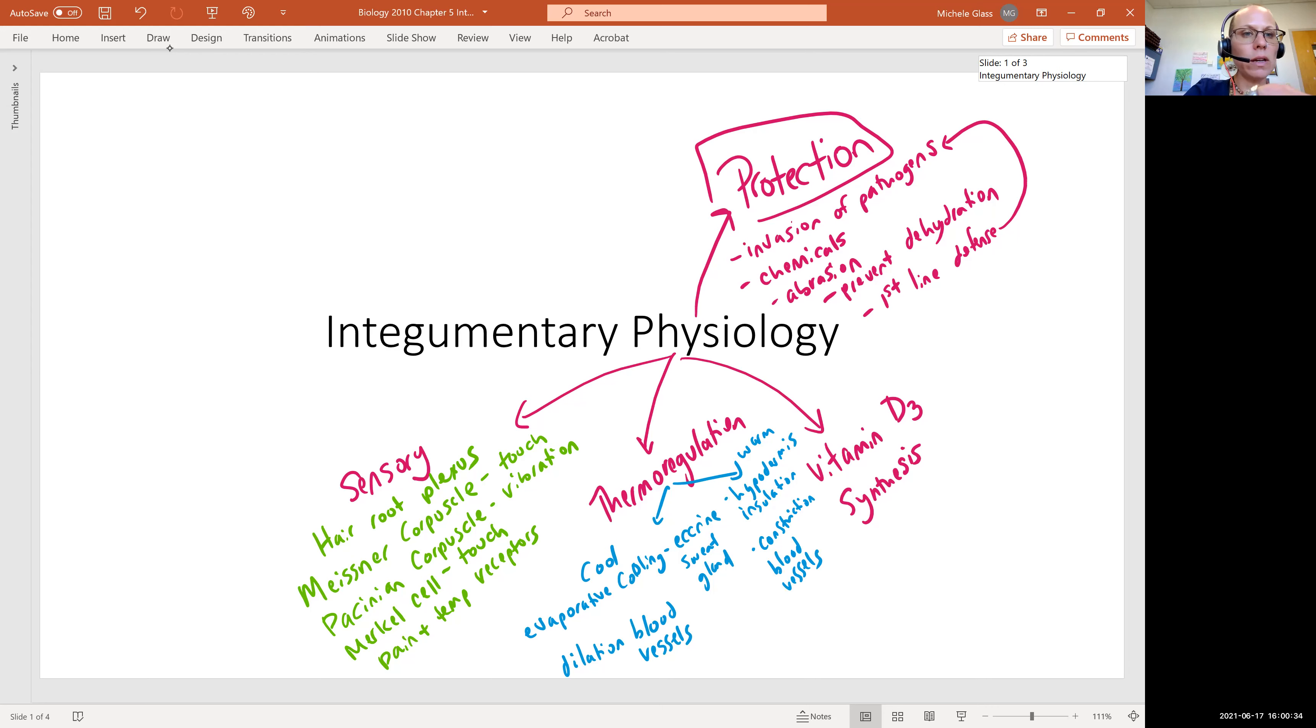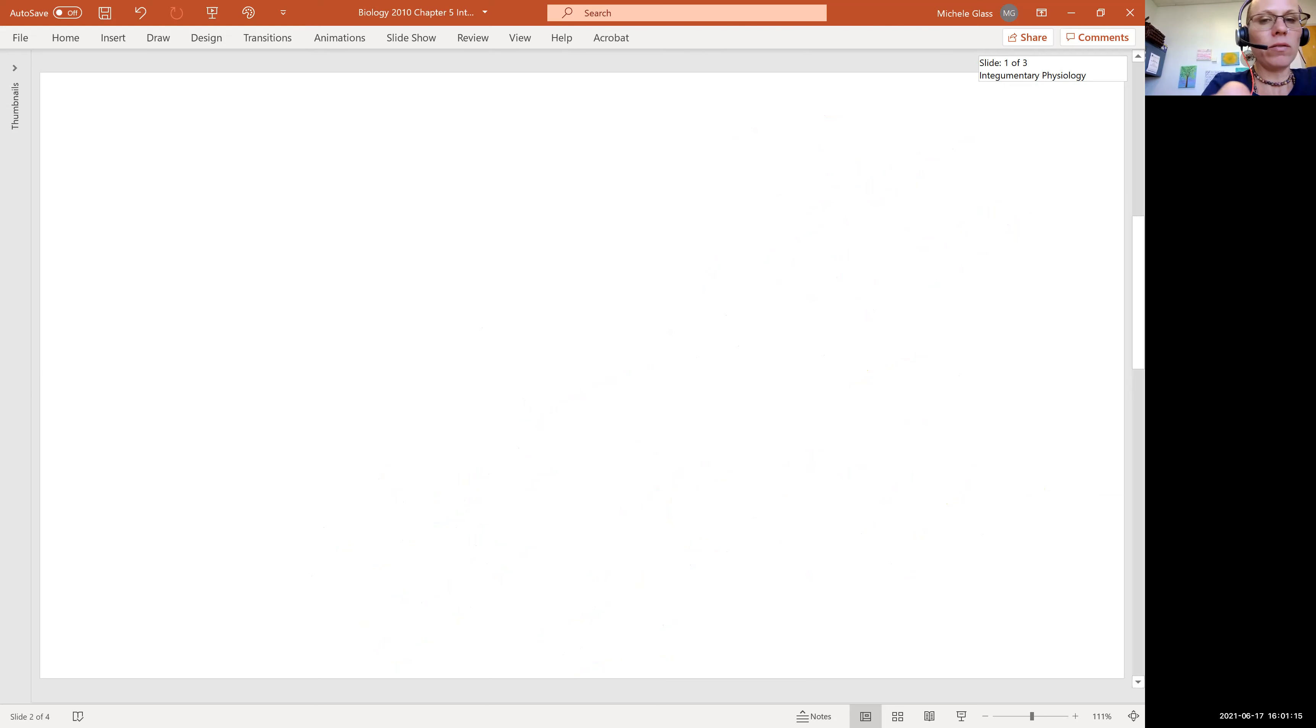And the last of these to look at is this vitamin D3 synthesis. And what I want to say here is that this is going to be important in absorption of calcium. And then the calcium ion is critical for healthy bones. So we have this direct connection between a healthy integumentary system and a healthy skeleton. So let's take a look at vitamin D synthesis in a little bit more detail.